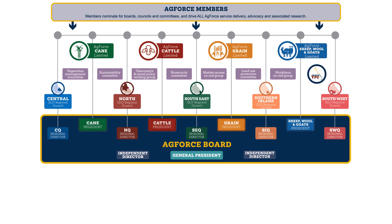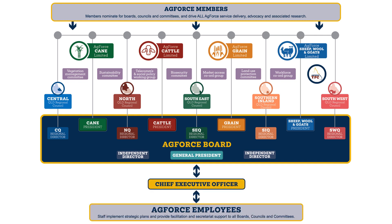Up to this point, we've been talking about members — over 100 members volunteering their time to help their industry. All these boards, councils, committees and working groups meet regularly and they all need support to do their job. It's the task of the CEO and the staff of AgForce to provide the secretariat support to the boards and councils, committees and working groups, and to implement AgForce's strategic plans. So that's how it works: 35 staff and over 100 volunteer members on boards, councils and committees, all leading on behalf of over 6,500 AgForce members across Queensland.